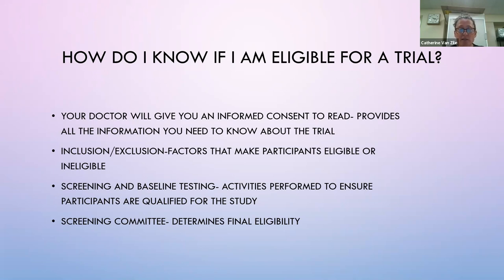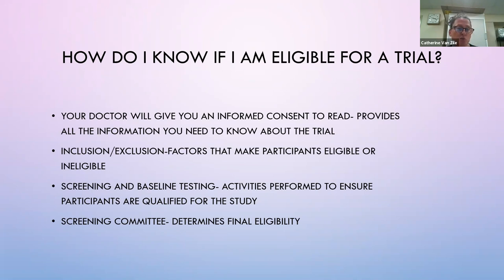Inclusion and exclusion criteria are factors that make patients eligible or ineligible for a study. For example, inclusion could require patients to be between 10 and 85 years of age and have a specific disease at a certain severity. Exclusion could be age — if you're 86, you're excluded. Or maybe they only want moderately severe disease, and if you're too severe you're excluded. Coexisting medical conditions can also exclude you. Depending on the study, inclusion and exclusion criteria could be 5 to 10 points or as many as 30 to 40 points.